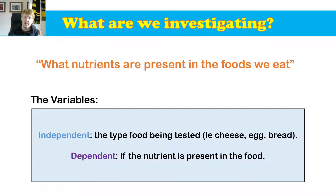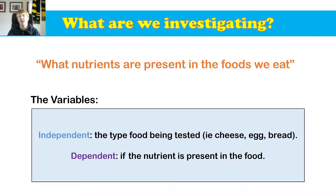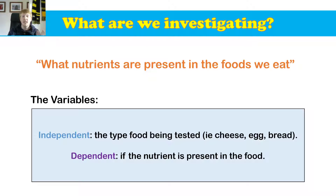So how do we do that? What are we investigating? We are literally investigating what nutrients are present in the food that we eat. There are two variables: the independent variable — the one we change — is the type of food we are testing, for example cheese, egg, bread, whatever it is we're looking at. The dependent variable, the one we measure, is whether a particular nutrient is actually present in the food through the tests.